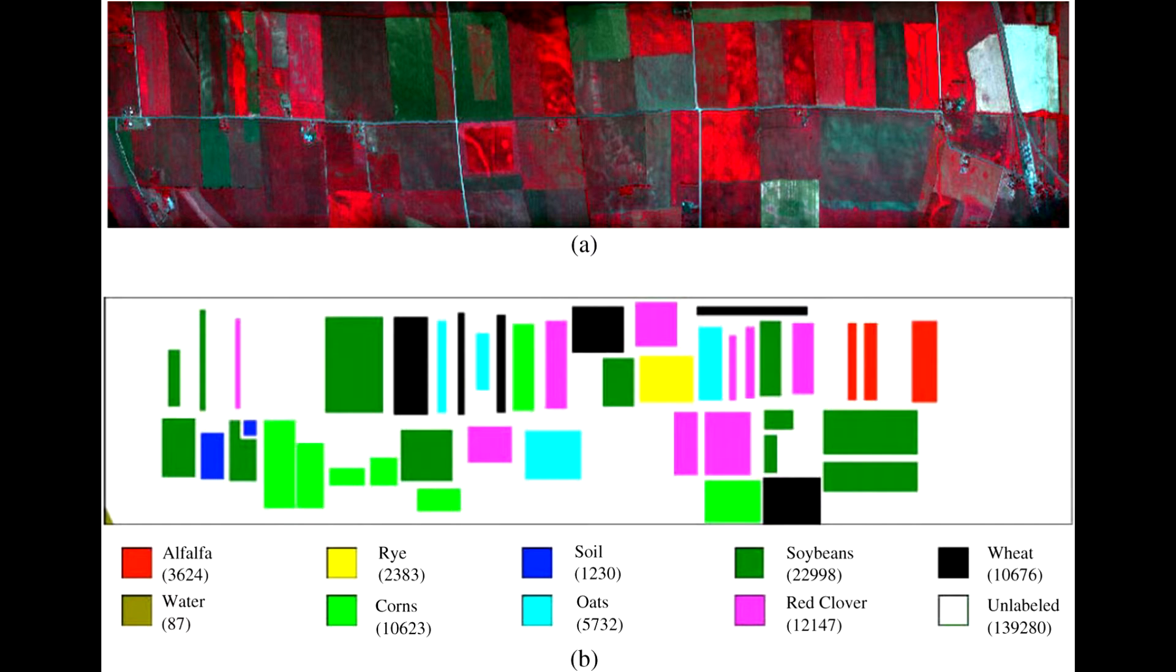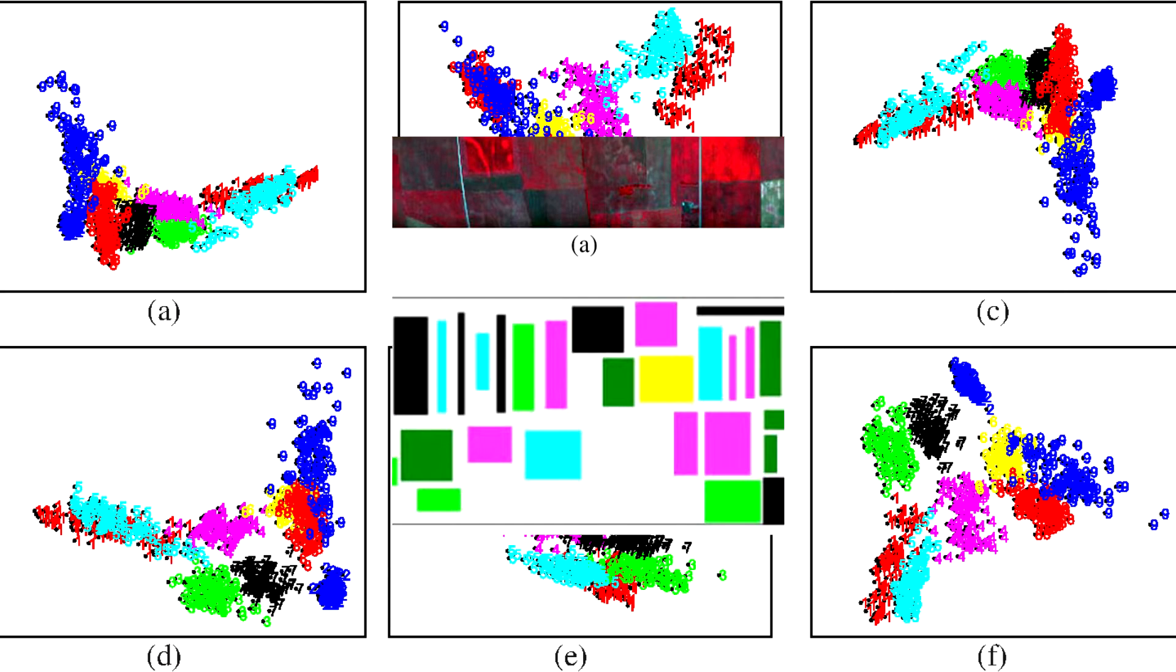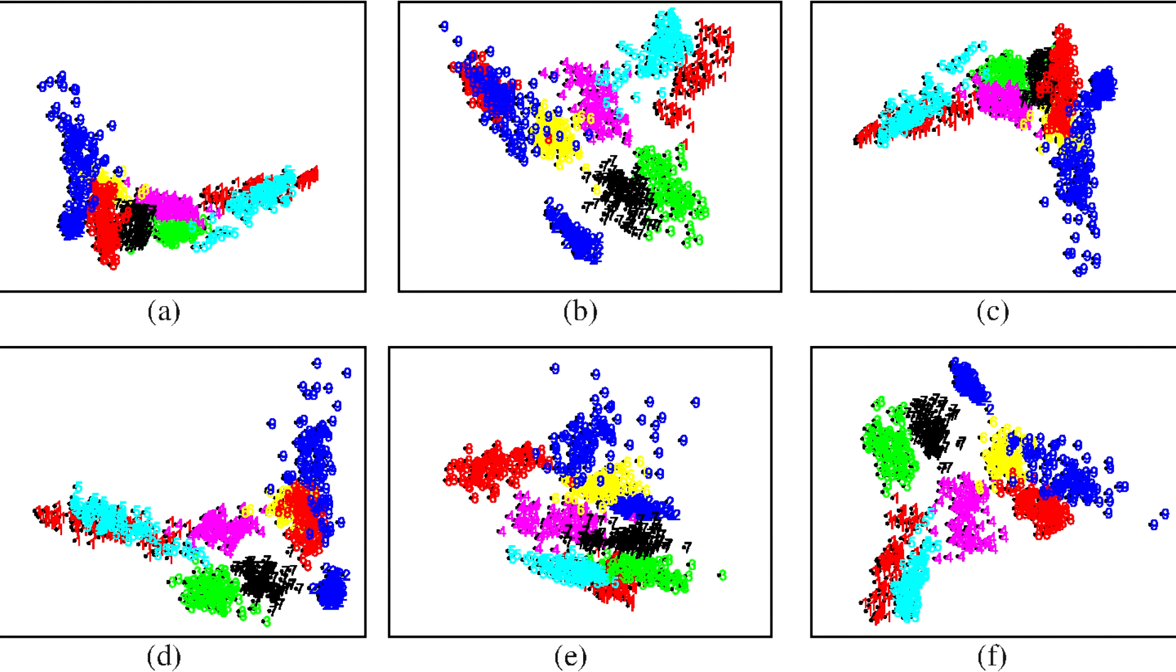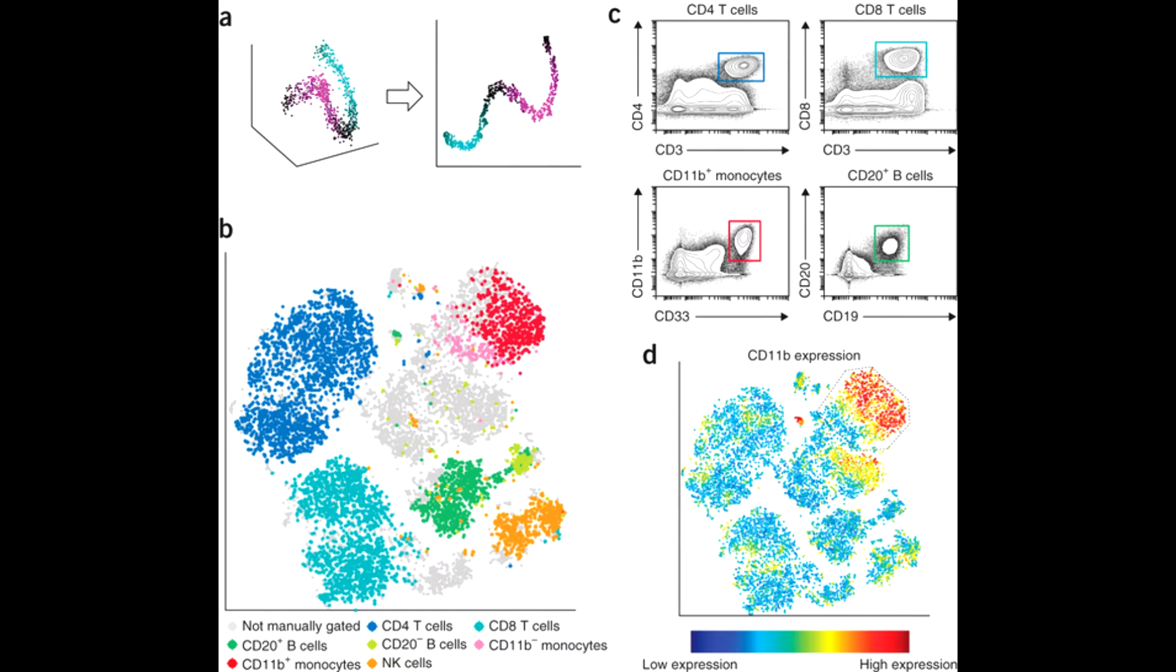Manifold learning is a popular recent approach to non-linear dimensionality reduction. Algorithms for this task are based on the idea that the dimensionality of many datasets is only artificially high. Each data point consists of perhaps thousands of features, yet may be considered as a function of only a few underlying parameters. That is, the data points are actually sampled from a low-dimensional manifold that is embedded in a high-dimensional space.